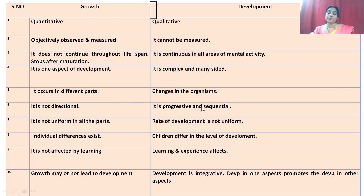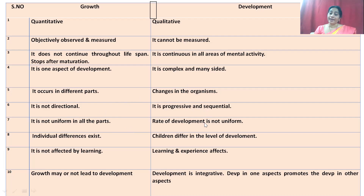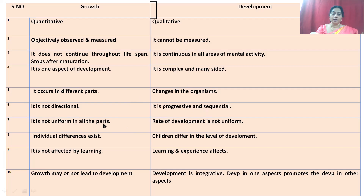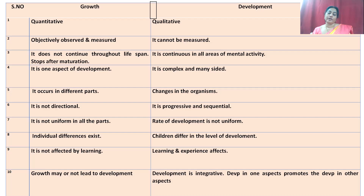Growth is not directional, whereas development is progressive and sequential. Growth is not uniform in all parts of the body, and the rate of development is also not uniform — sometimes it is low, sometimes it is at a peak. In growth, individual differences exist; some are short, some are tall, some are stout, some are thin. In development, children differ in the levels of development. Growth is not affected by learning — whether you learn or not, physical growth takes place. In development, both learning and experience play very important roles and affect development.